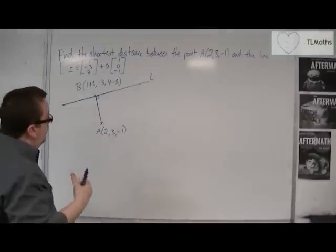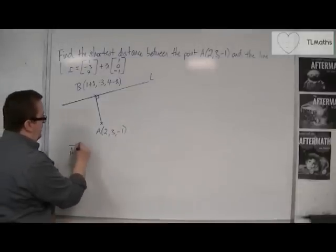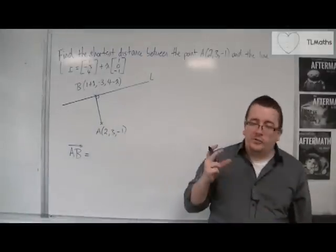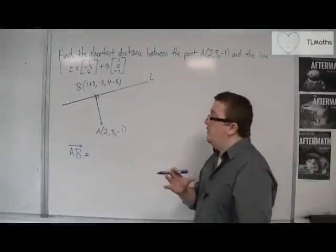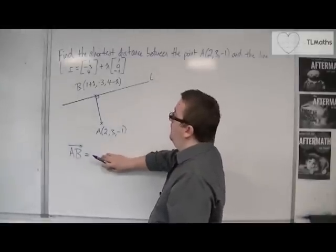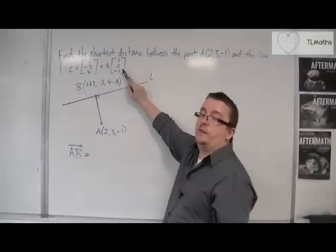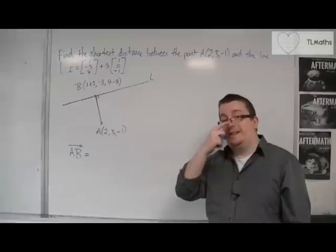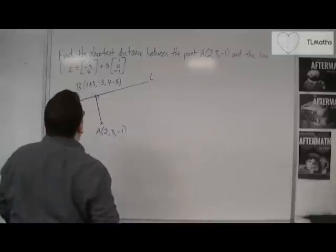What I want to do is find the vector AB. The reason I want to find AB is because I know that it is perpendicular to the line. Because it's perpendicular to the line, I know that vector AB will be perpendicular to (1, 0, -1), the direction vector of the line. So we can use the scalar product being equal to zero in order to find lambda. That's my route through.